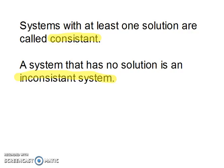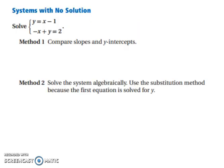Systems with at least one solution are called consistent. A system that has no solution is an inconsistent system. Let's start by looking at systems with no solution.